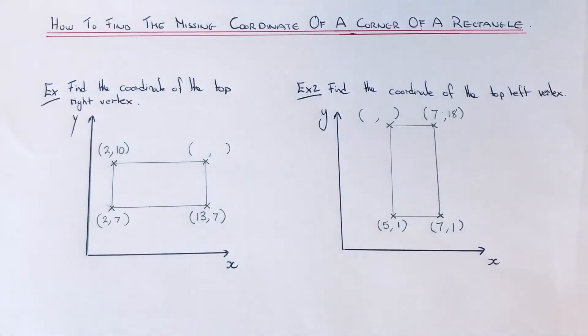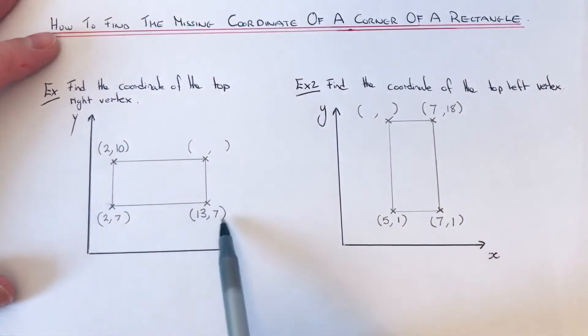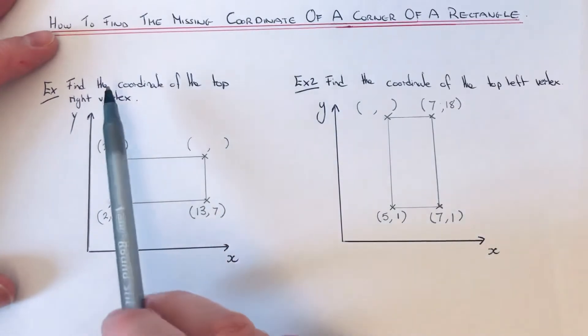Hi guys, welcome back. This is Maths 3000. Today I'm going to show you how to work out the missing coordinates of a corner of a rectangle if you're given the coordinates of the other three corners.